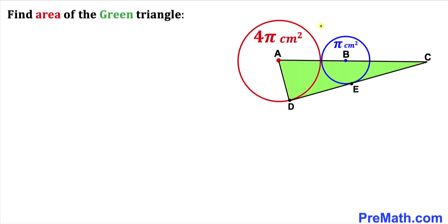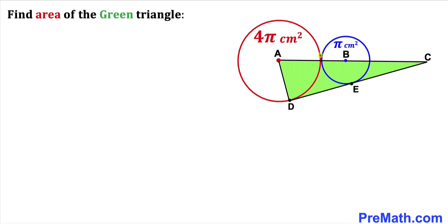Welcome to pre-math. In this video we have got two circles — the red one and the blue one — such that the area of the red circle is 4π cm² whereas the area of the blue circle is π cm². As a result we get this green triangle ADC, where A and B are the centers of these circles, D and E are the points of tangency, and furthermore these two circles are tangent to each other. Our task is to calculate the area of this green shaded triangle.